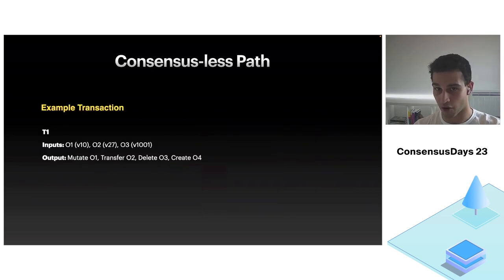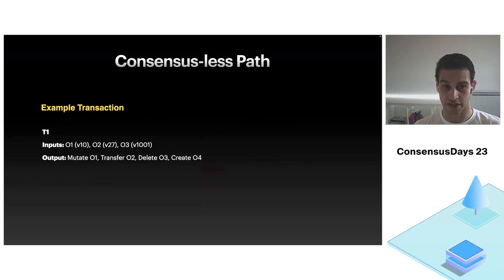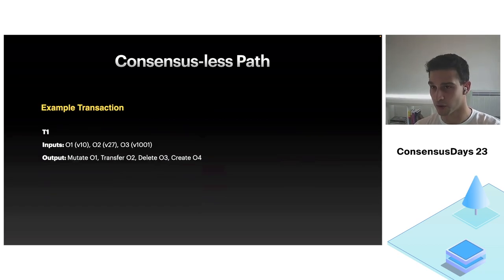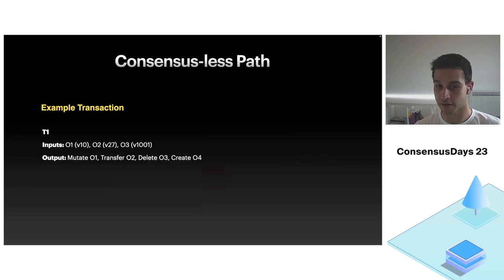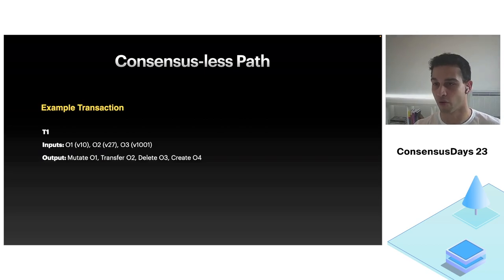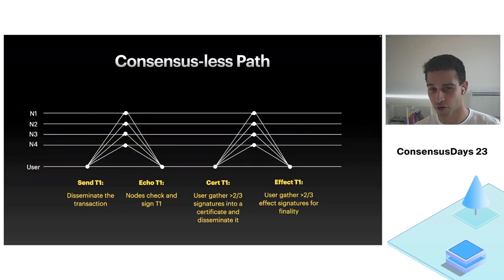Let's take an example of a consensusless transaction — one that does not go through consensus — and see how it executes. Transaction T1 takes three input objects: O1 at version 10, O2 at version 27, and O3 at version 1001. It tries to mutate O1, transfer O2 to another owner, delete O3, and create a new object O4. Here is the general flow, and we'll go through it step by step.